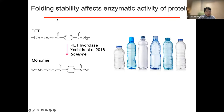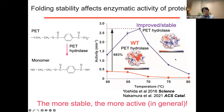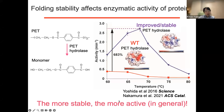For example, folding stability directly affects enzymatic activity of proteins. The PET hydrolase was recently identified — this enzyme can degrade PET into a monomer, which should be crucial for recycling plastic bottles. Unfortunately, the wild-type PET hydrolase activity was not as high as expected. But we can introduce several mutations to obtain an improved version of PET hydrolase. The improved and stabilized version shows much higher activity compared to the wild-type. In general, the more stable the protein is, the more active. So understanding folding stability is also very important for enhancing enzymatic activity.